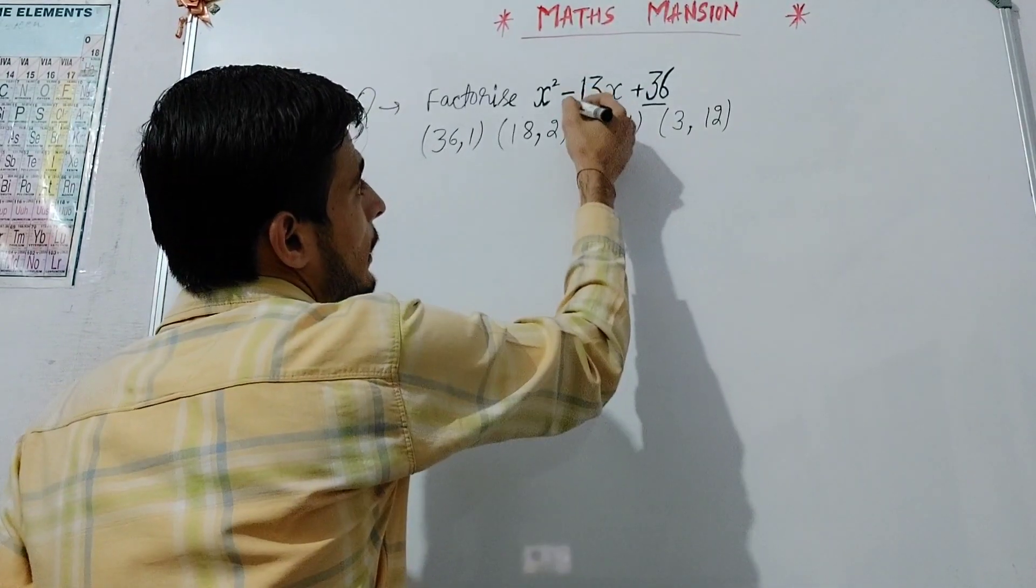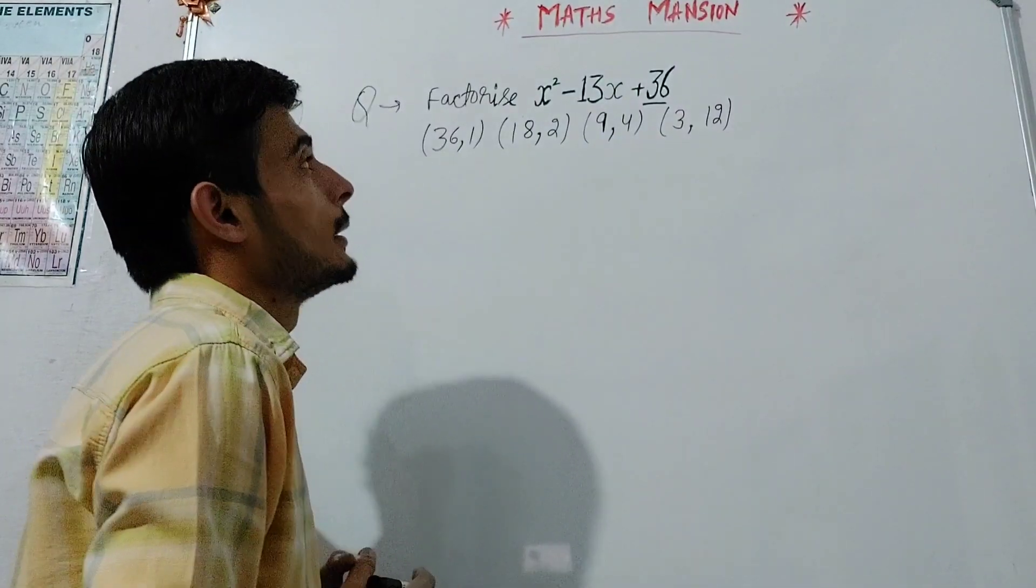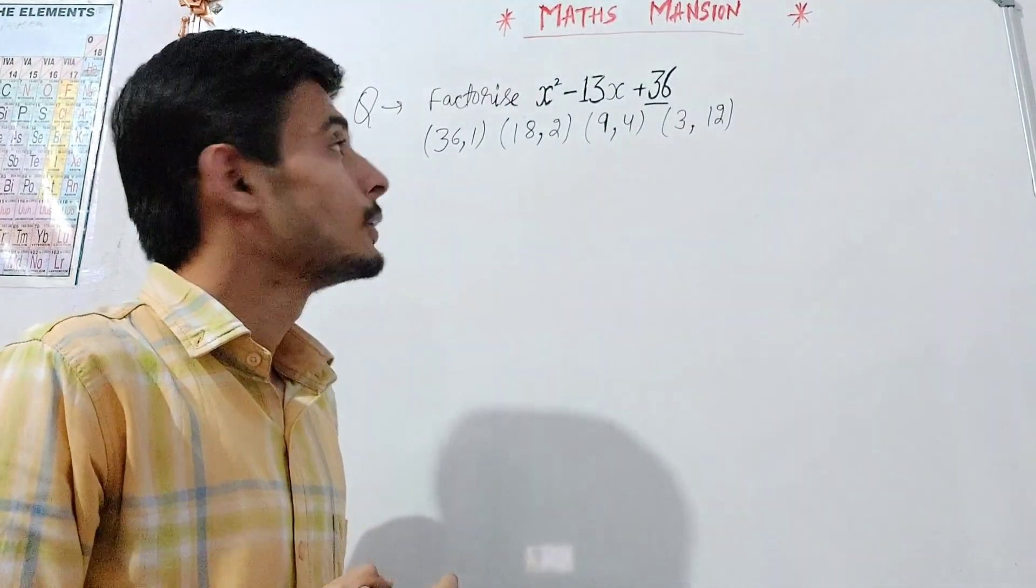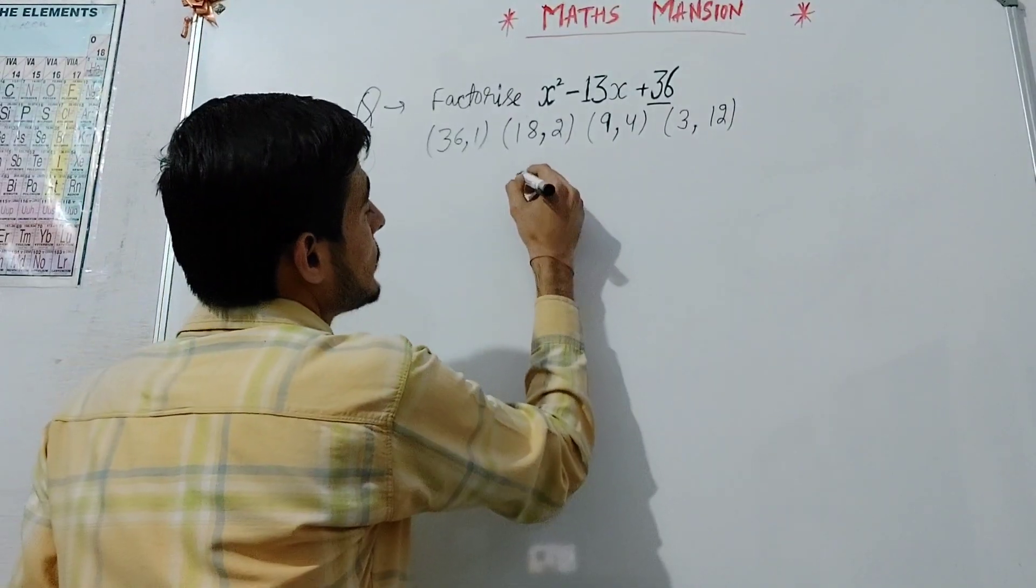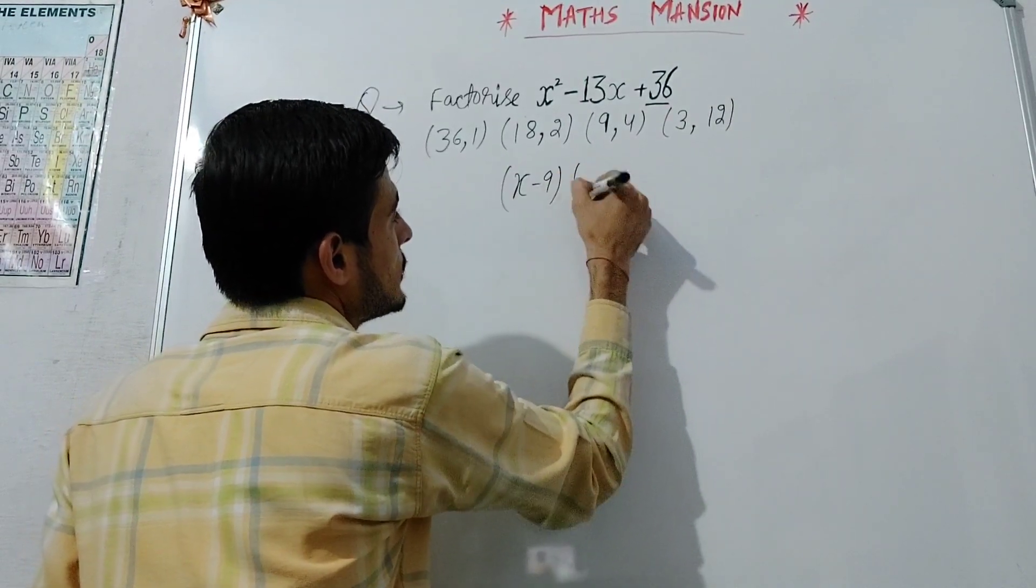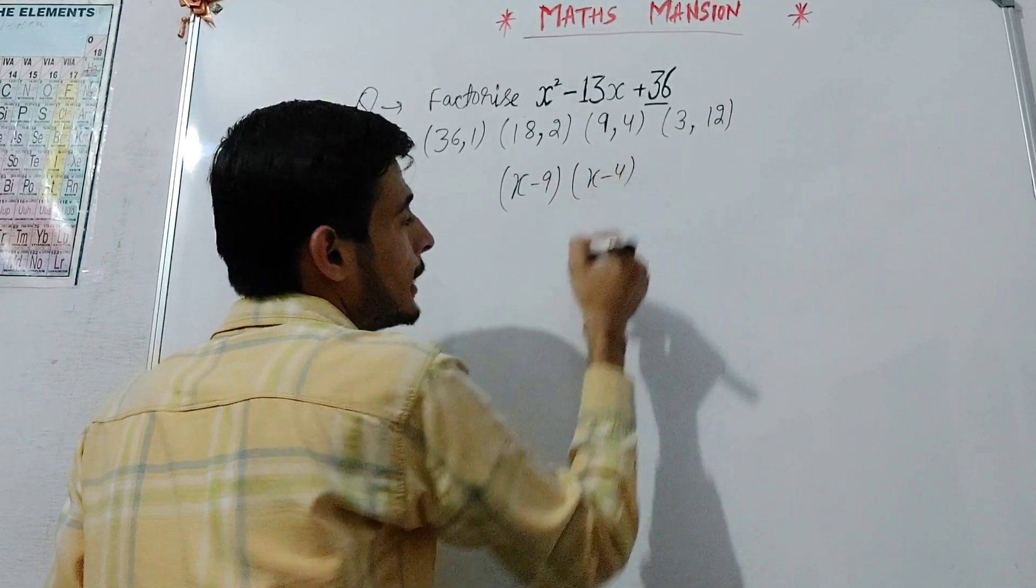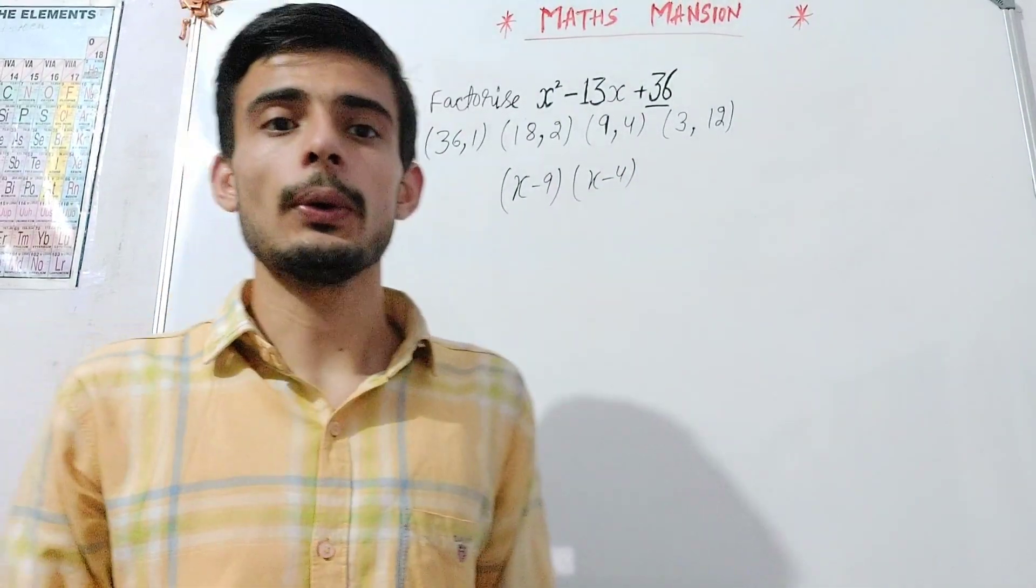But here, we have a negative sign. So our answer will be (x - 9)(x - 4). This is our answer.